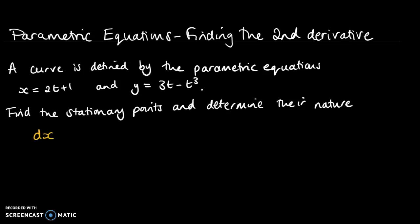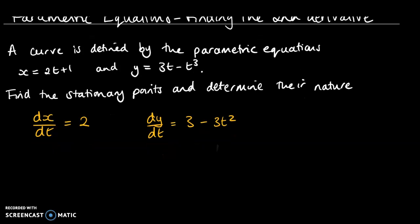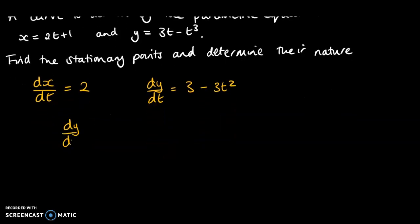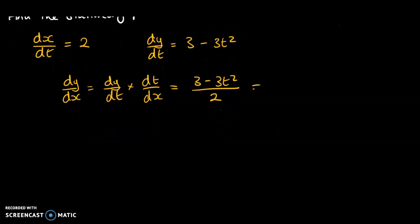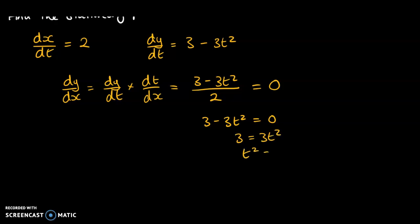The first thing is to find dx/dt and dy/dt. From there we can find dy/dx as dy/dt multiplied by dt/dx. Then we find the stationary points by setting that equal to 0. So we get 3 minus 3t² = 0, which gives 3 = 3t², so t² = 1, meaning t = ±1.